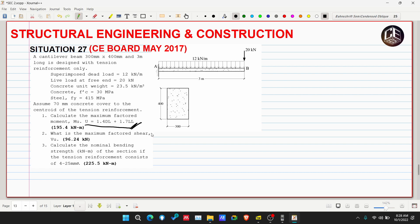As you can see, this combination load is based on the previous NCP. In NCP 2015, this is 1.2 DL plus 1.6 LL. This exam was May 2017, so the code used is NCP 2001 to 2010.